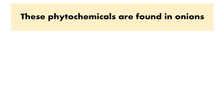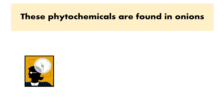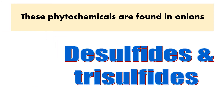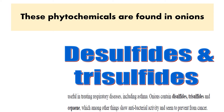These phytochemicals are found in onions, one of my favorite foods — disulfides, trisulfides. I actually listed some others, but you need to be familiar with those terms that are covered in the course pack.